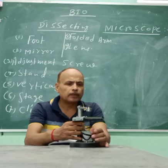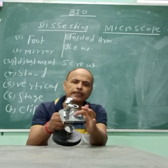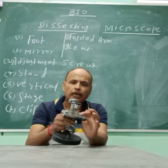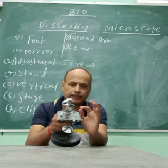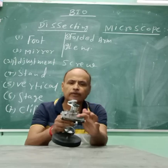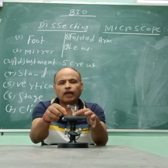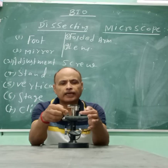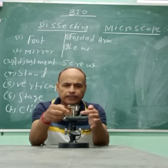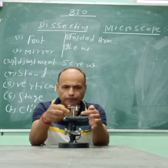One thing to observe: this is the stage. The stage has a piece of glass. That glass piece acts as the stage surface. On the stage there are clips which hold the object slides.